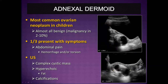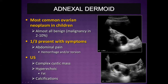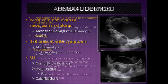Adnexal dermoids are the most common ovarian neoplasm in children. Almost all are benign, with a very low rate of malignancy. One-third can present with symptoms — usually abdominal pain related to hemorrhage and/or torsion. On ultrasound, these are complex cystic masses, and the appearance relates to their composition: fat is hyperechoic, there can be calcifications, and cystic areas are anechoic. They can hemorrhage or cause torsion, just as large adnexal cysts will do.